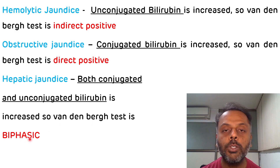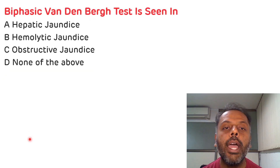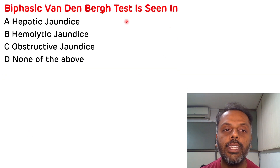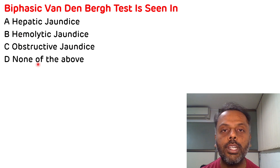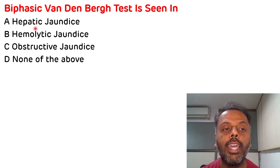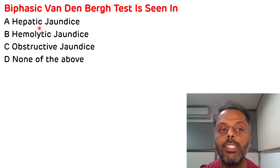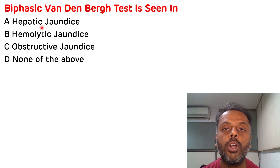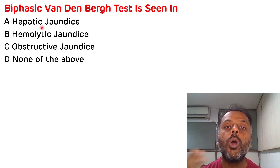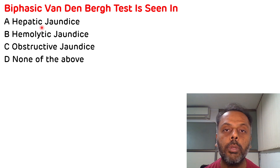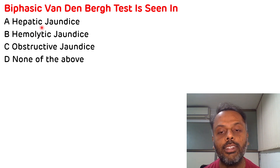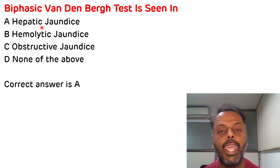Coming back to the multiple choice question — biphasic Van den Bergh test is seen in: hepatic, hemolytic, obstructive, or none of the above? The correct answer is A. Biphasic Van den Bergh test is seen in hepatic jaundice, because in hepatic jaundice both conjugated and unconjugated bilirubin are increased. So the correct answer is A.